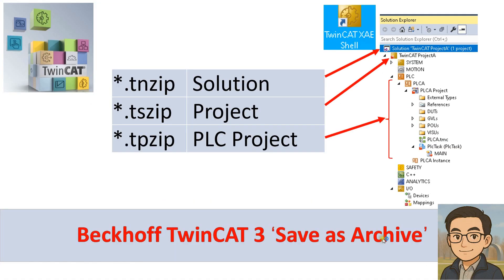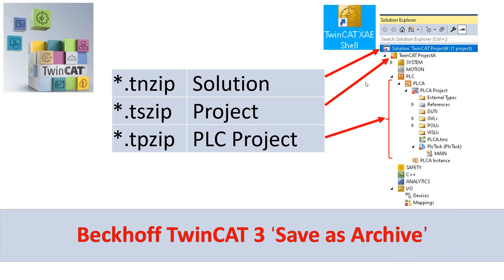Hello everyone. In this video I'd like to discuss TwinCAT 3's 'Save as Archive' zip function to archive your project. Recently I received some emails from TwinCAT 3 programmers who complained they lost part of their files in the TwinCAT 3 project. This brought up the topic of how we can archive or zip our project. TwinCAT 3 has a solution and a project, and under the project you have a PLC project, safety project, or C++ project. Each runs as an individual folder under the solution folder. 'Save as Archive' is the best solution for archiving or sending your project.